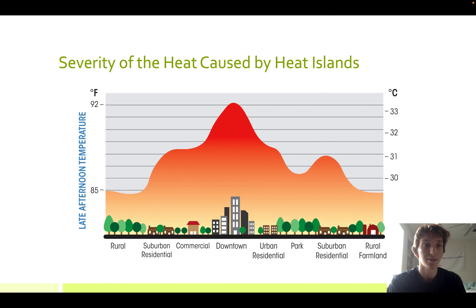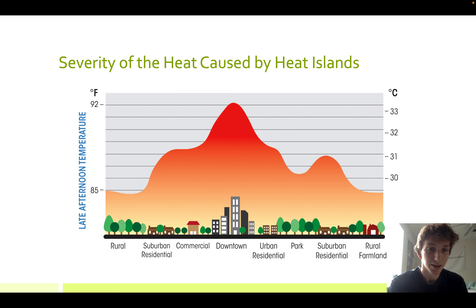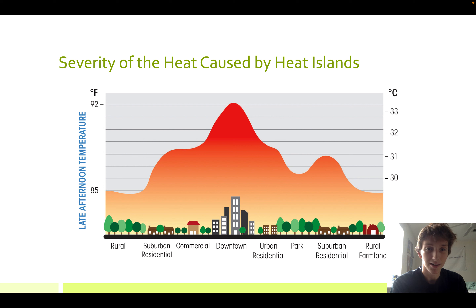Here's a graph of the severity of the heat caused by heat islands. We can see that downtown is obviously the hottest where there's a lot of buildings, but suburban areas are also hotter. We can see rural areas are the coolest, but also parks are much cooler than other areas even if they are in cities.